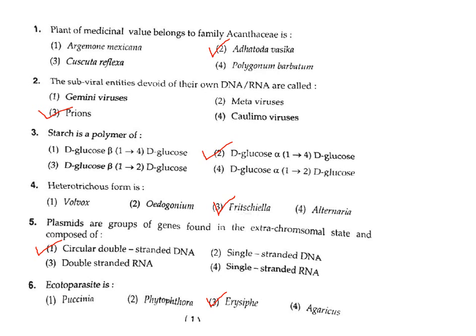Question 6: What is an ectoparasite? An ectoparasite is one that lives on the surface; it does not go inside the plant or animal body. The correct answer is Erysiphe, Option 3.